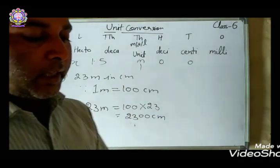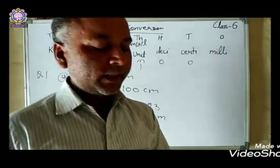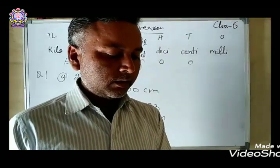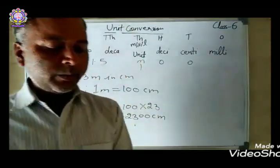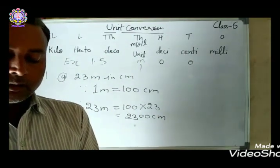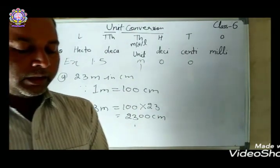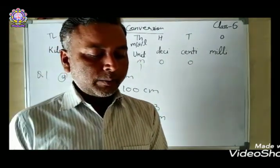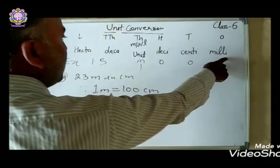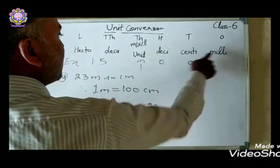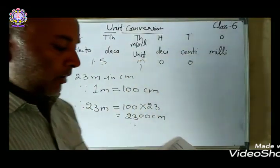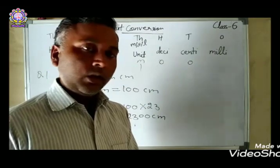For the remaining parts: 12 kg into gram — one kg equals 1,000 gram, so multiply 12 by 1,000. For 85 kilometers into meter — one kilometer equals 1,000 meter, so multiply 85 by 1,000. For 5 kilometers into millimeter — one kilometer equals 100,000 millimeters, so multiply 5 by 100,000.